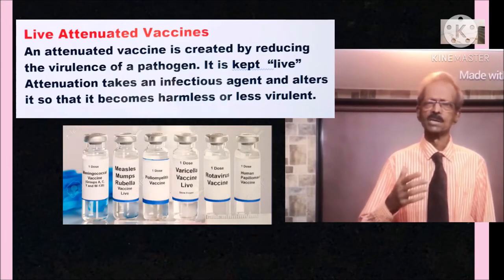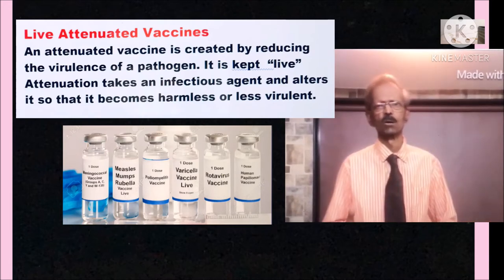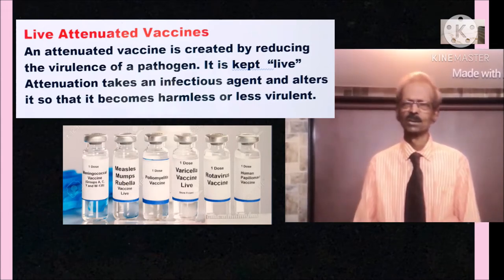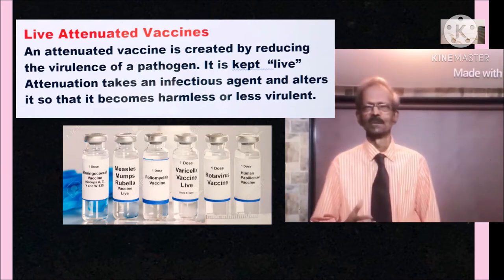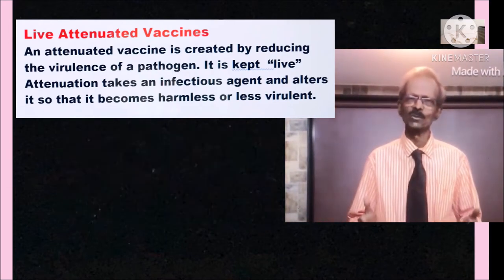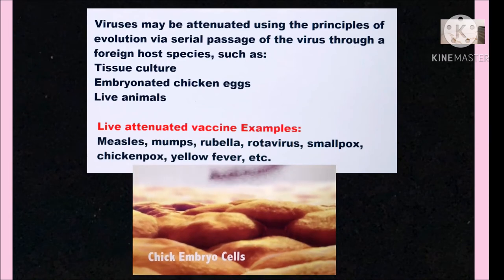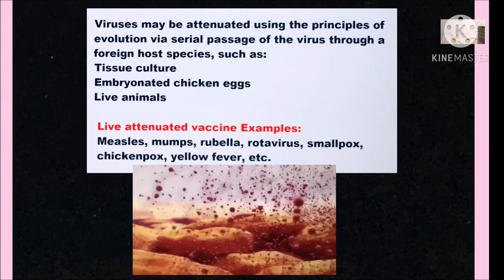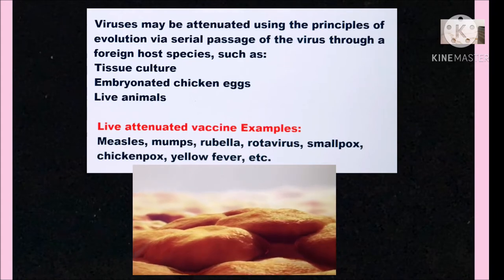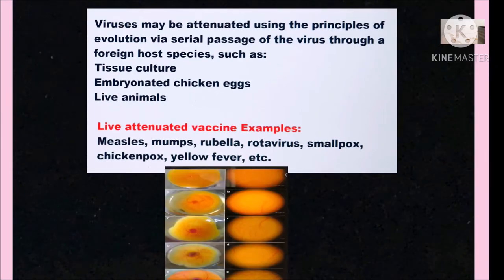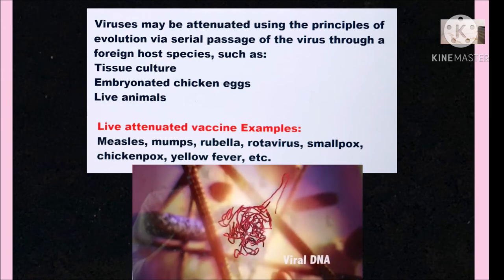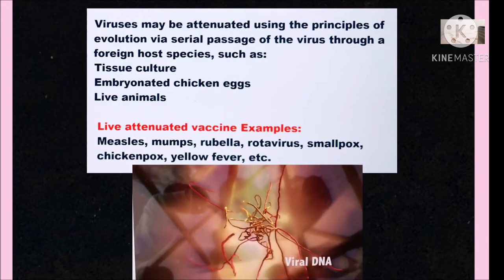An attenuated vaccine is created by reducing the virulence of a pathogen while keeping it live. Attenuation takes an infectious organism and alters it so it becomes harmless or less virulent. Viruses may be attenuated by serial passage through a foreign host such as tissue culture, embryonated chicken egg, or live animals. Examples of live attenuated vaccines include vaccines for measles, mumps, rubella, rotavirus, smallpox, chickenpox, and yellow fever.